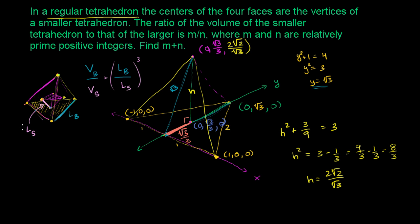Where we left off in the last video, we were able to figure out the coordinates of all of the vertices for this face of the tetrahedron. Now we can use those coordinates to figure out the coordinates of the center of that face, which is also one of the vertices of the smaller tetrahedron. Once we figure out that coordinate, we can find the distance between those two points, which gives us the length of one side of the small tetrahedron. Then we can compare that to the length of the large tetrahedron and get the ratio.